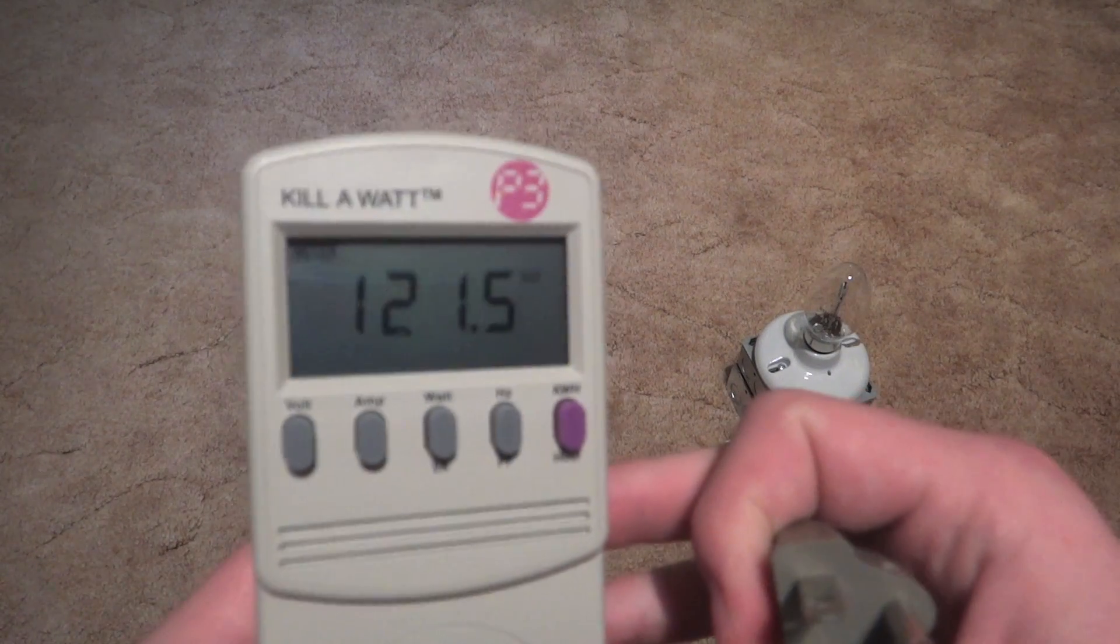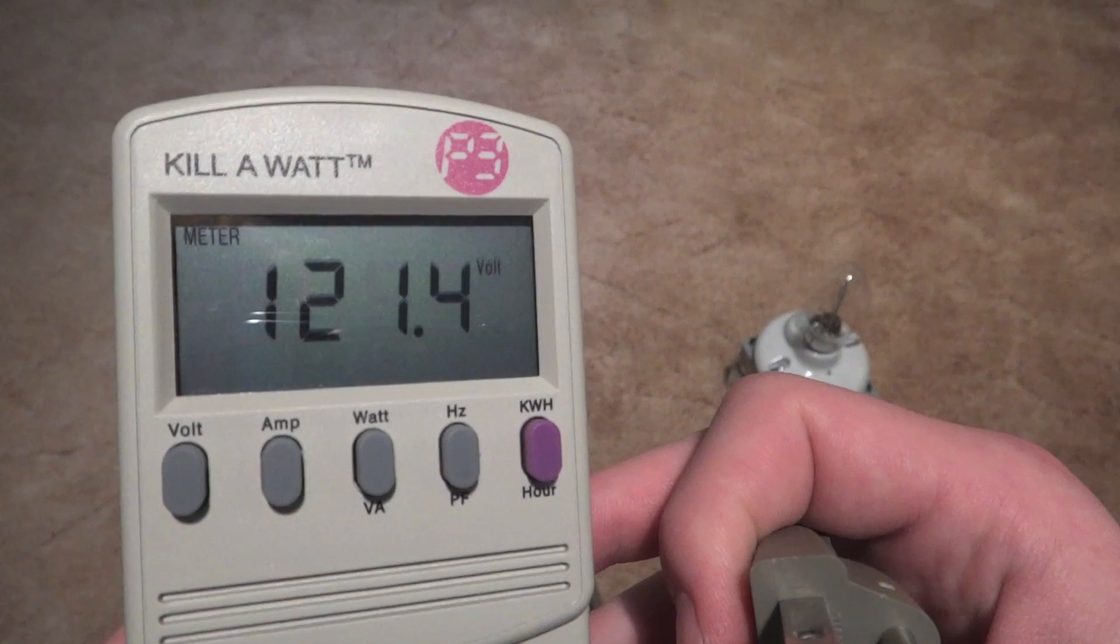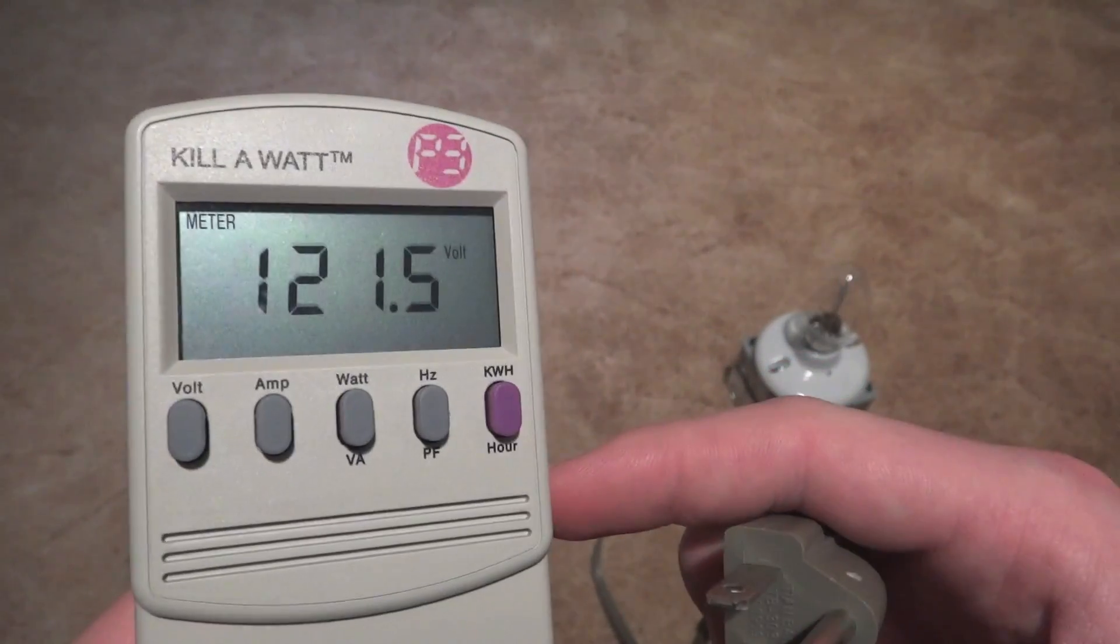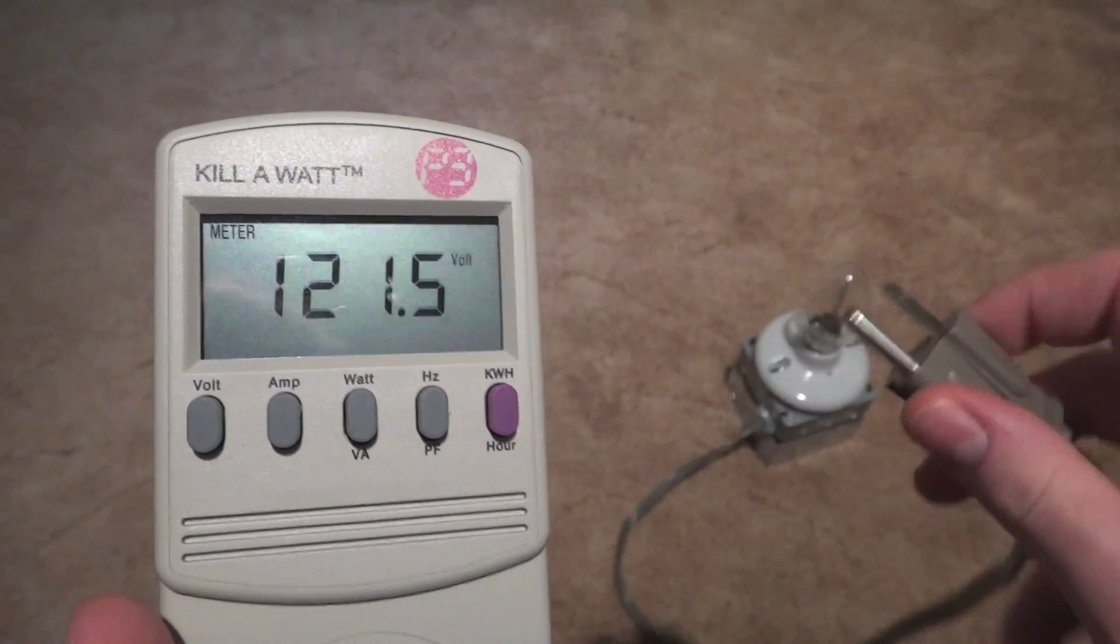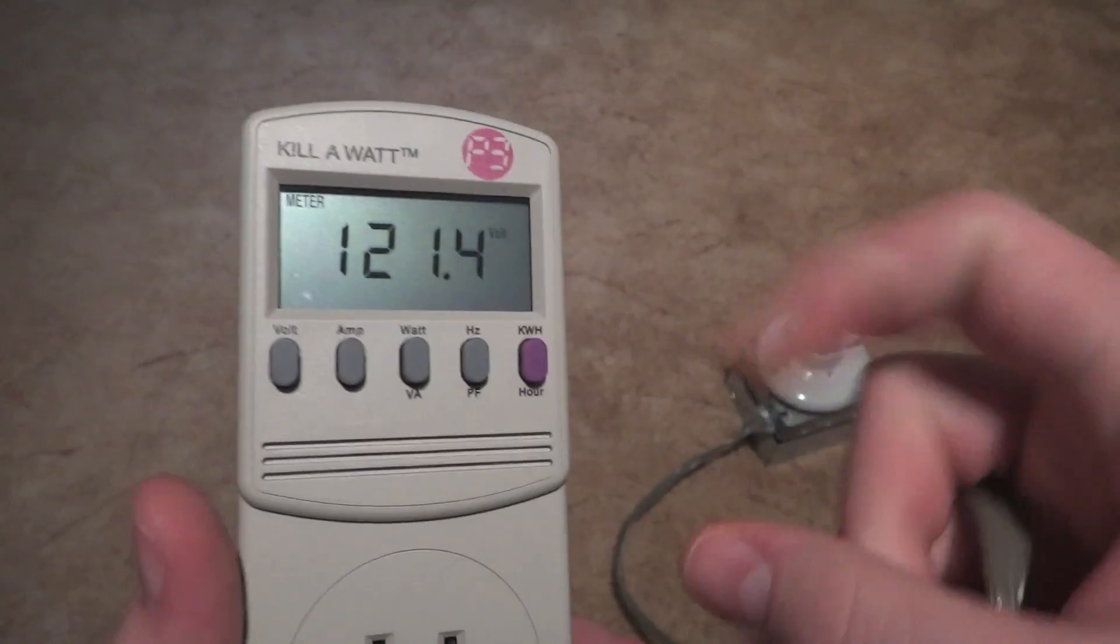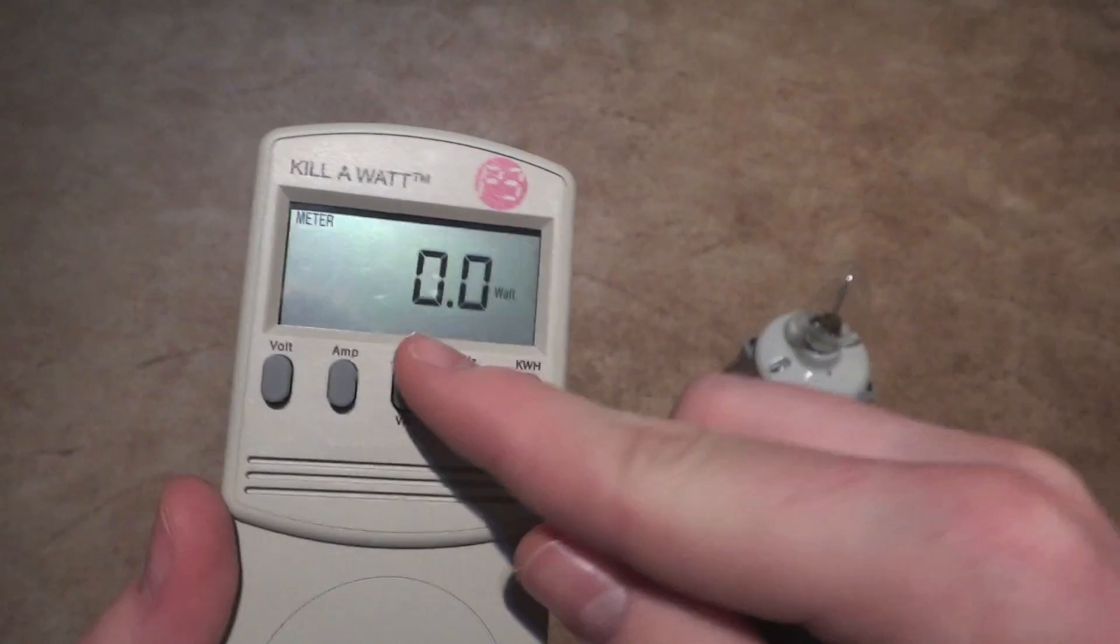So I have my kilowatt meter here. As you can see, the current line voltage, because it does fluctuate as you can see, is 121 volts. We have amps and watts of course, and hertz.